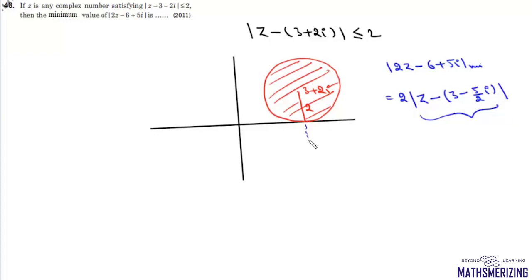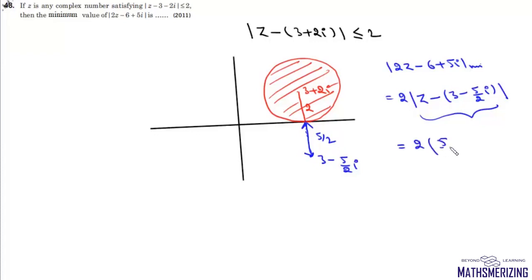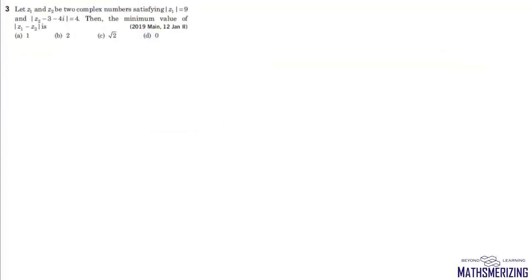The point 3 - 5/2 i is plotted. We need to find the minimum distance from this point to the circle. The minimum distance is 5/2. So the minimum value of the modulus function will be 2 times 5/2, which is 5. So the answer to this question is simply 5.